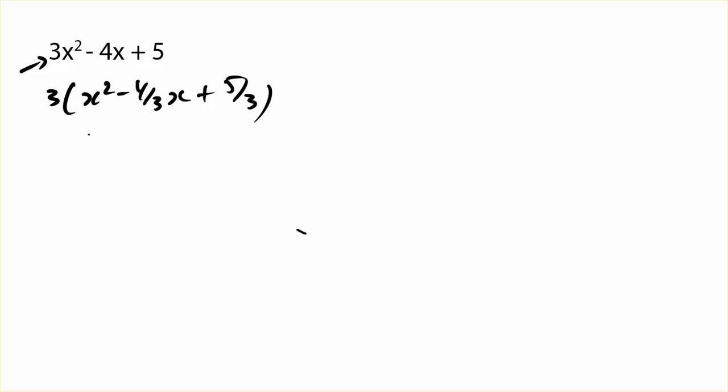So all I have to do is repeat the process of completing the square. So I go brackets, x, the half of this term is negative 4 over 6 squared,